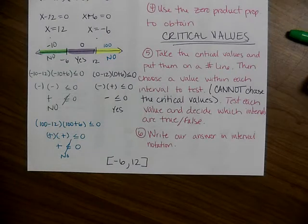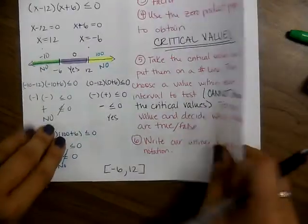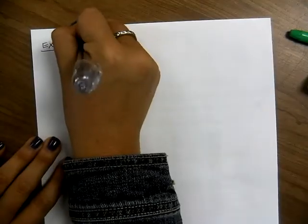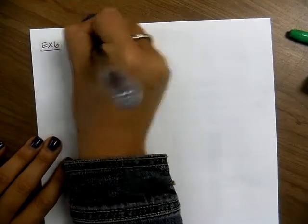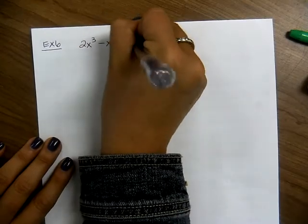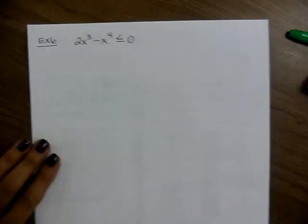Ready to try another one? It's going to be fun. Let's try: 2x cubed minus x to the fourth is less than or equal to zero.